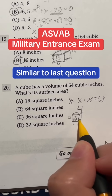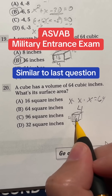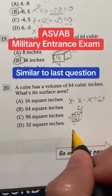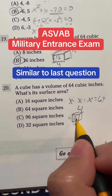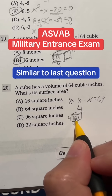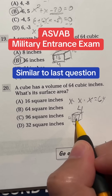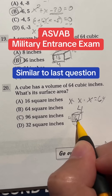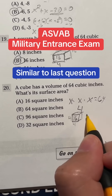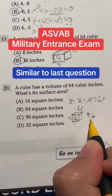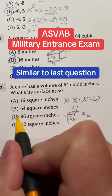Think of rolling a die — you end up getting six sides. So that means I'm going to do 16 times 6. What do you get when you do 16 times 6? That ends up giving you 96, which means our final answer is C.